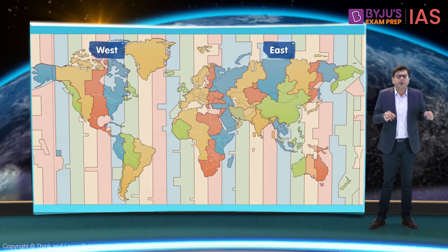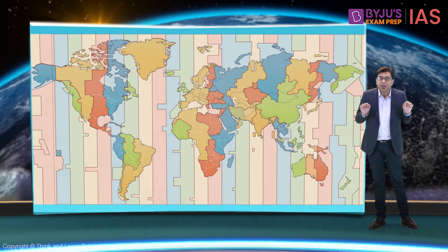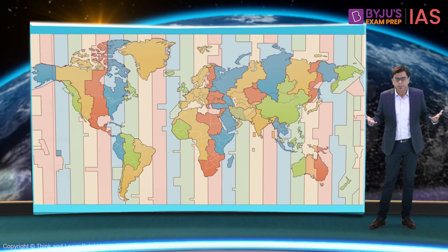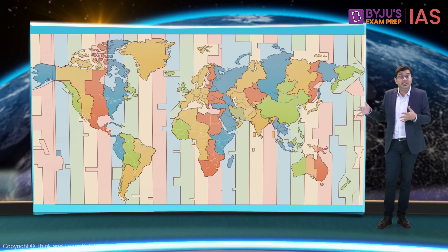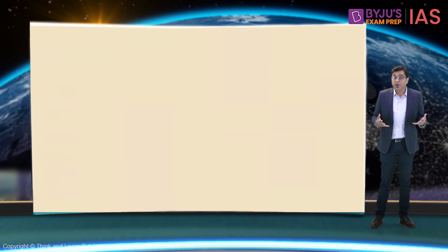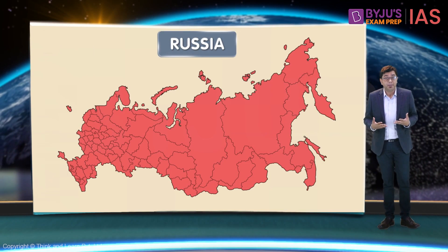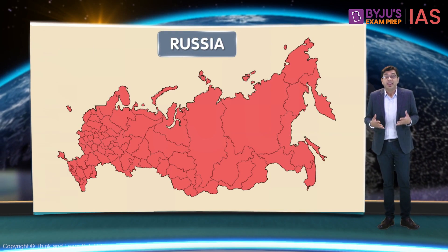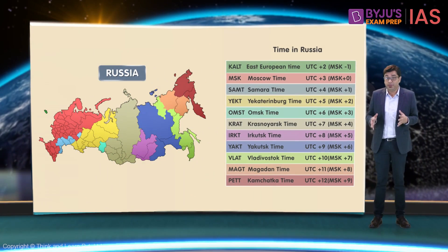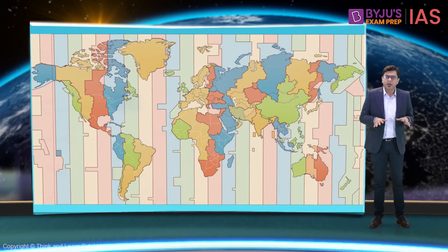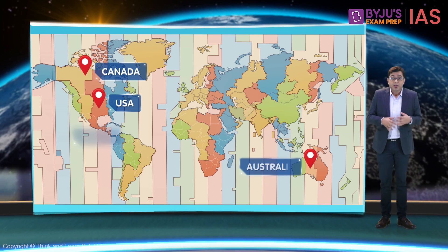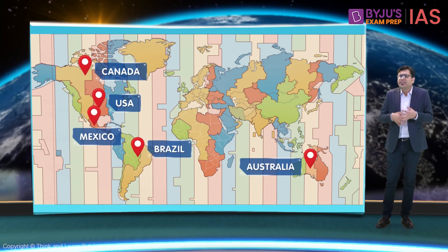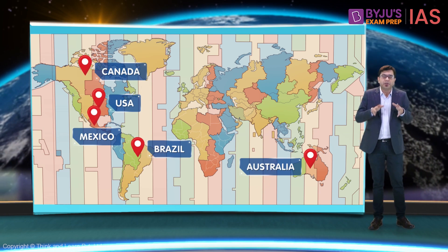In such a scenario, following only one time can lead to a lot of problems. Therefore, multiple time zones are chosen in these countries. A good example is Russia, which has 11 time zones. Similarly, the United States, Canada, Australia, Mexico, and Brazil are some other countries that follow multiple time zones.